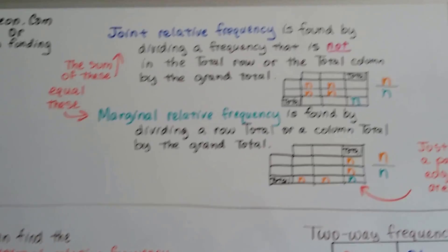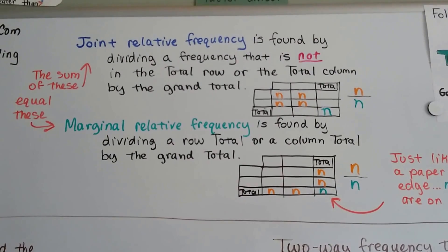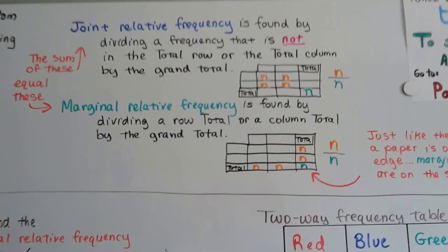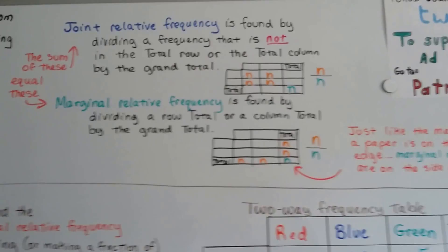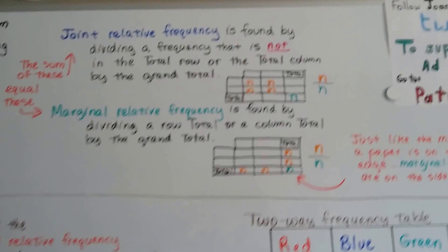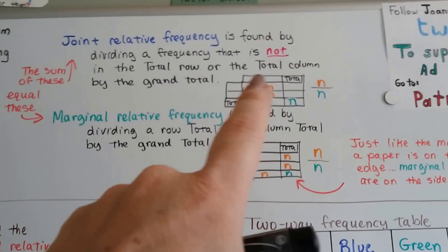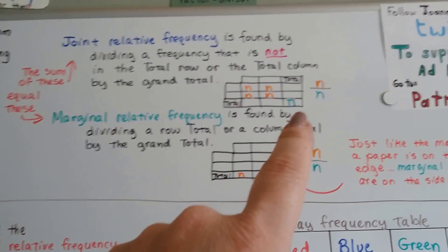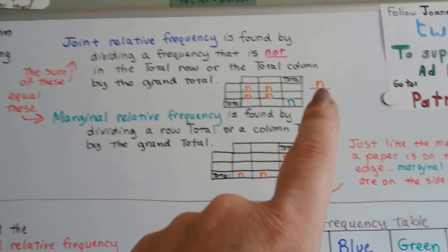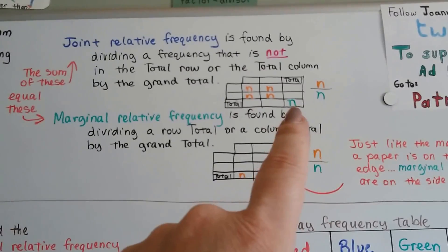We talked about in the last video joint relative frequency and marginal relative frequency. Joint relative frequency is found by dividing a frequency that is not in a total row or total column by the grand total. So it'd be any orange number divided by this green one, the grand total.